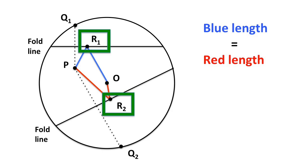This means that the set of R points constructed in this way form an ellipse around the fixed points P and O.